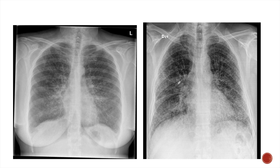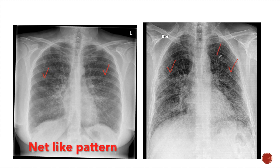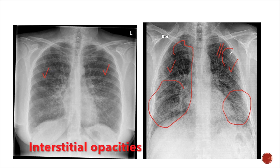Now look at these two X-rays. In both these X-rays we can see that the opacities are bilateral, more or less symmetrical, do not coalesce with each other, and have a net-like pattern. We can see the net-like pattern of opacity throughout both lungs. These are interstitial opacities, and both these cases are interstitial lung disease.